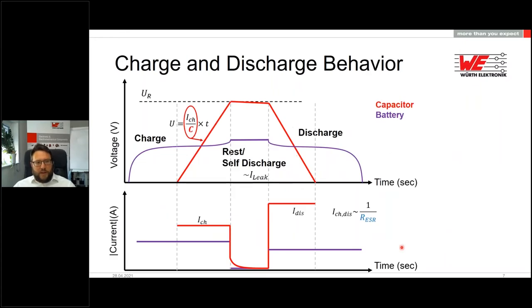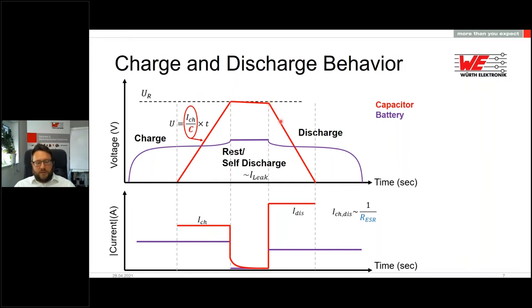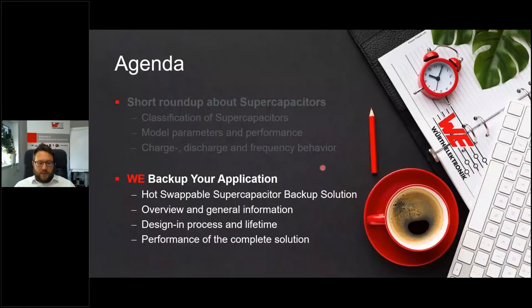When comparing charge and discharge behavior of supercapacitors with batteries, the charge and discharge current for EDLCs is much higher. Charging via constant current produces a linear voltage rise. When discharge starts, there is an initial voltage drop due to ESR, then the voltage falls further linearly — because supercapacitors are still capacitors. In comparison, batteries maintain an almost constant cell voltage at constant current operation.